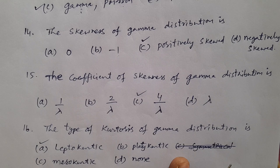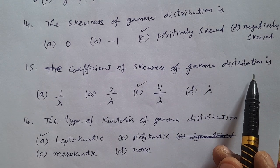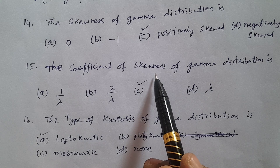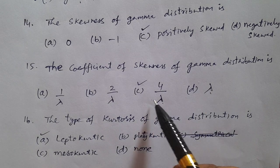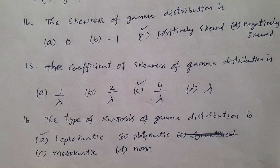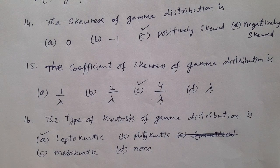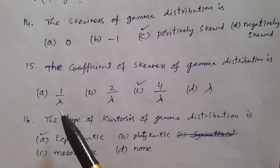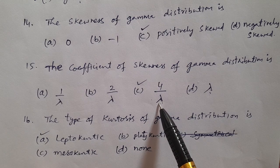Question number 15: The coefficient of skewness of gamma distribution — that is beta 1 — what is the beta 1 value of gamma distribution? Options: A) 1/λ, B) 2/λ, C) 4/λ, D) λ. The answer is C — 4/λ is the correct answer for the coefficient of skewness, beta 1, of gamma distribution.